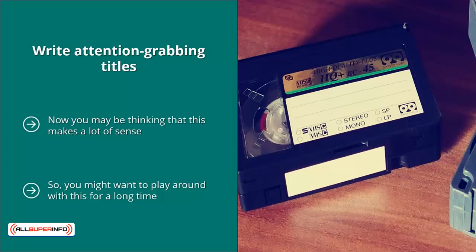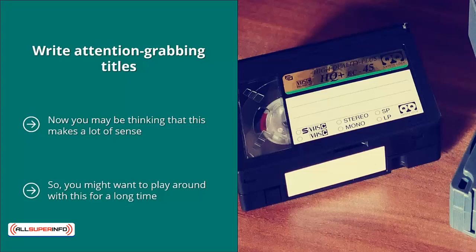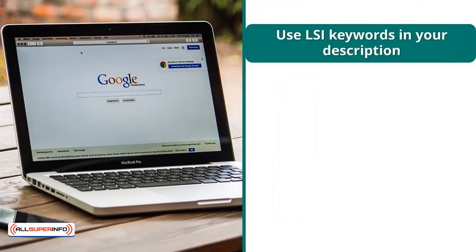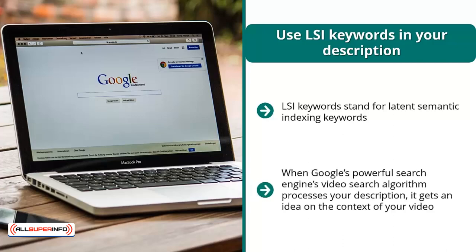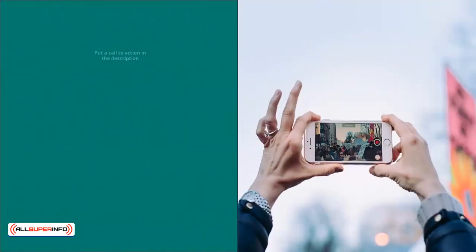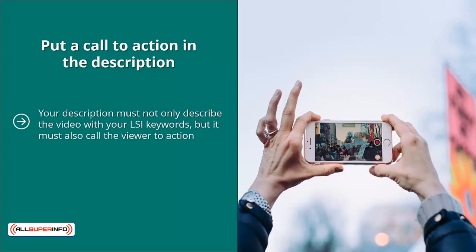What makes this even more difficult is that you cannot use really long titles. Use LSI keywords in your description. LSI keywords stand for latent semantic indexing keywords — these are keywords that are thematically related to your target keyword. When you find the most related keywords to your target keyword and put them in a description that makes grammatical sense and flows naturally, you're creating context. When Google's video search algorithm processes your description, it gets an idea of the context of your video — it's not just some random video that popped up.